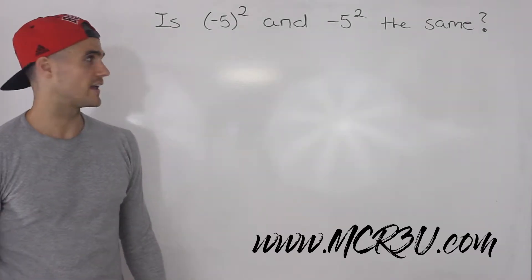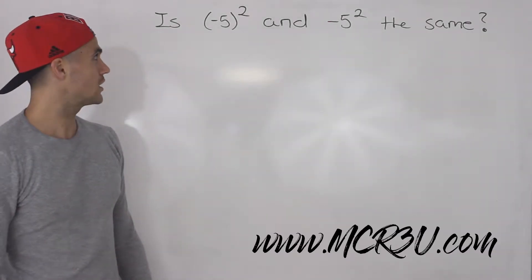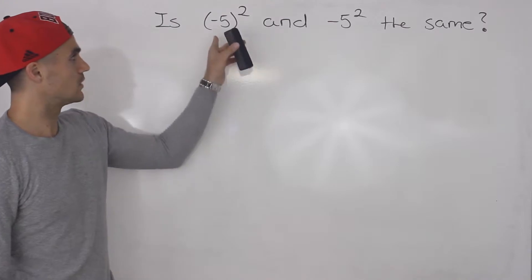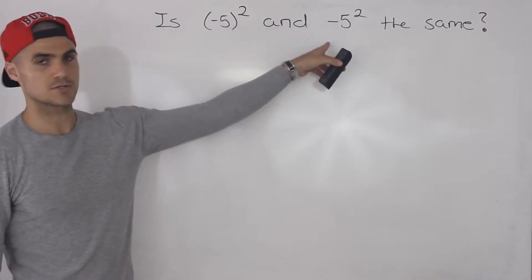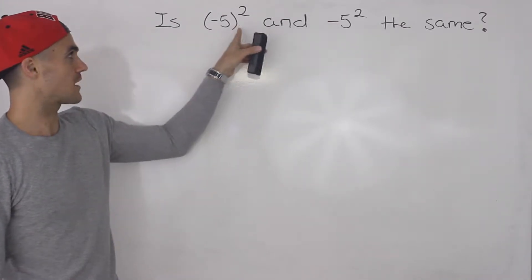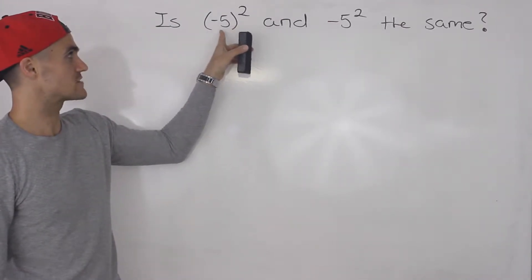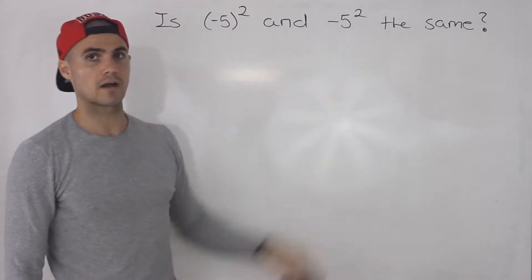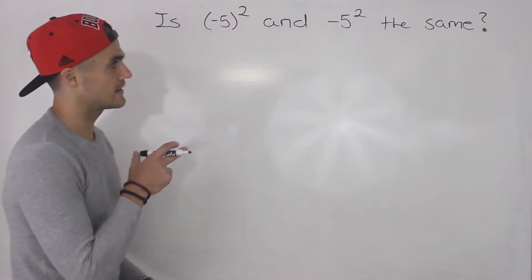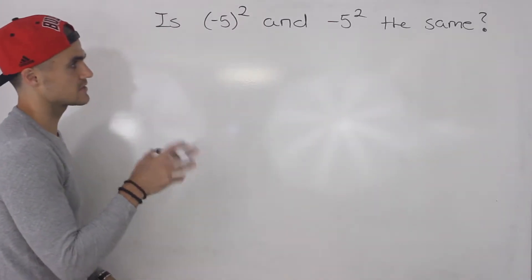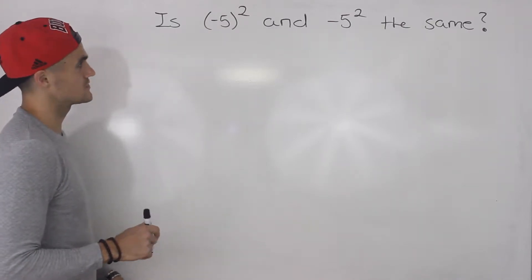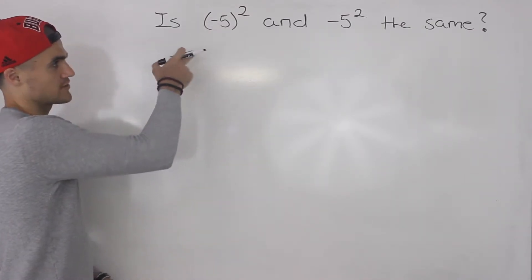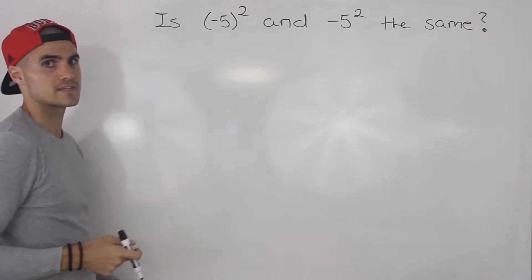Welcome back guys, Patrick here. In this video we have to discuss whether these two expressions are the same: negative five to the power of two where negative five is in brackets, and then just negative five to the power of two. The short answer is that these are not the same.